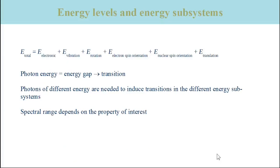The different contributions are listed according to the gaps between the energy levels. In spectroscopy, these gaps are important because they define the photon energy needed to induce a transition between energy levels. If the photon energy matches the energy gap between the ground state and an excited state, there may be a transition between these two states. To excite electronic transitions we need relatively high-energy photons; to excite nuclear vibrations we need photons of lower energy. The photon energy required decreases as we go from subsystems on the left to subsystems on the right in this equation.